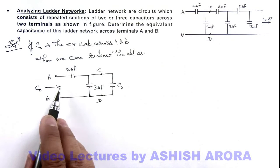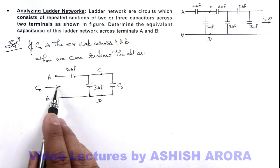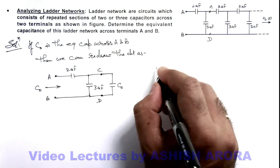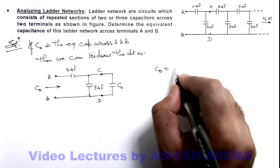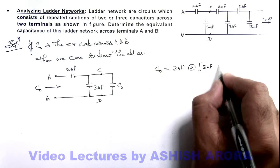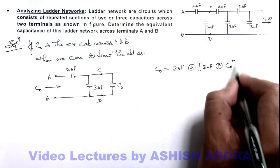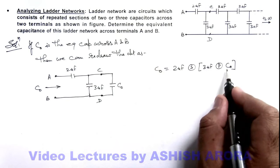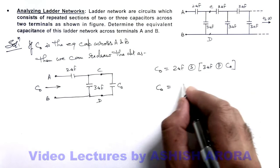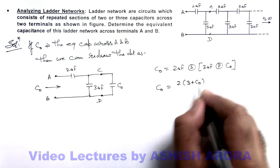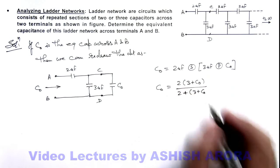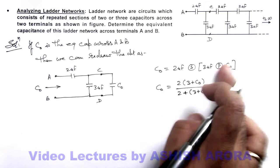We can see that C₀ is the equivalent combination of 3 microfarad and C₀ in parallel, in series with 2 microfarad. So we can write: C₀ equals the 2 microfarad capacitor in series with the combination of 3 microfarad in parallel with C₀. The parallel combination adds directly, giving: C₀ = 2 × (3 + C₀) divided by (2 + 3 + C₀).